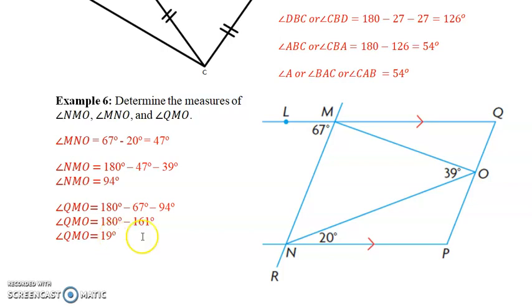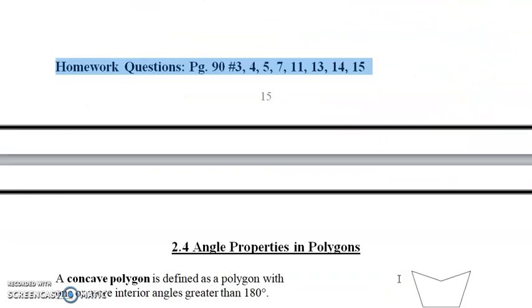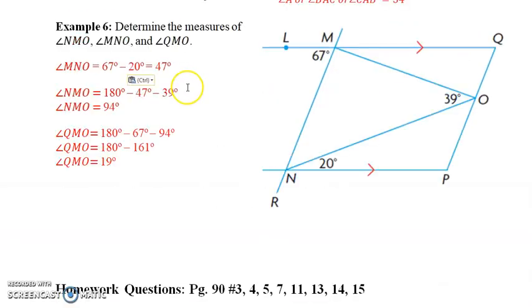And that's it for these videos. Remember, there's other ways to solve this question. This is just the method I use. There's not just one way to do them. That's the beauty of this—you can have a little fun. So, try some of these on your own right now. Look at homework questions on page 90, numbers 3, 4, 5, 7, 11, 13, 14, and 15. And then in the next video, we'll start looking at the last section of the chapter, 2.4 angle properties in polygons. Not just triangles, but polygons. So we'll look at quadrilaterals, pentagons, etc. I hope the videos are helping, and we'll talk again soon.